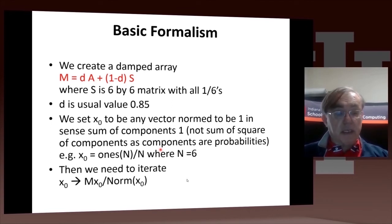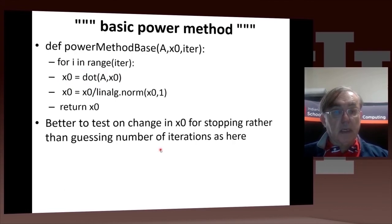And then we actually just iterate the following equation. X0 is replaced by M times X0 times the norm of the new value of X0, which should really say M times X0 in that equation.